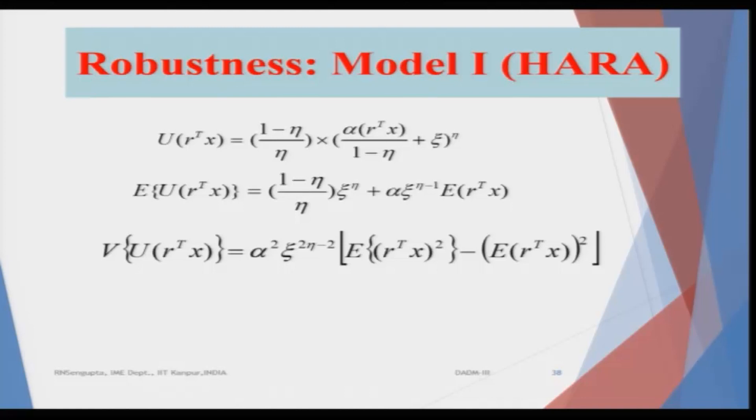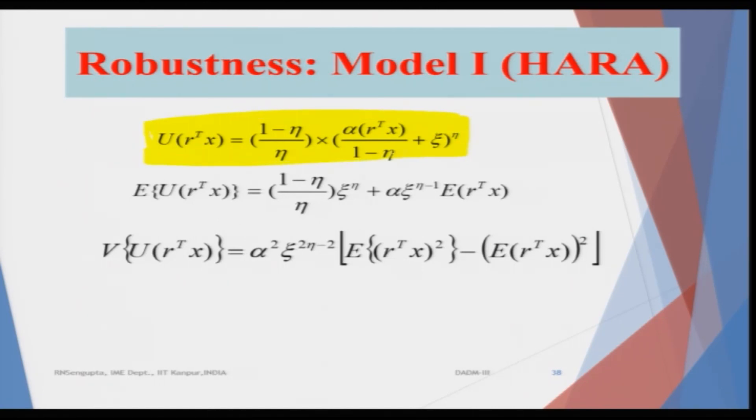Once the combined portfolio distribution is found, we need two things: the expected value of the portfolio utility under the HARA function, and the variance of the portfolio utility under HARA. We need these first and second moments because we want to maximize the expected value (first moment) and minimize the variance (second moment). The HARA utility function has parameters η and ζ, and the expected value of the utility for the portfolio is given by the resulting formula.